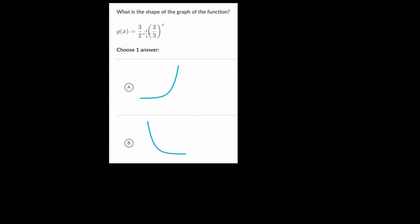So what is the shape of the graph of the function? We have g of x, 3 halves times 2 thirds to the x. So notice we have a fraction here. And so this is going to be decay, which we know decreases as the x value increases. So as x gets bigger and bigger, the function value gets smaller and smaller.